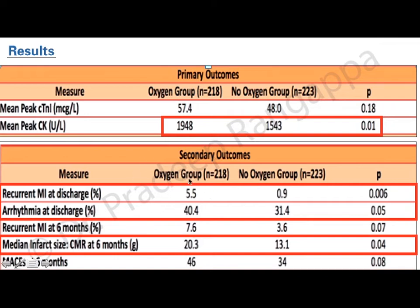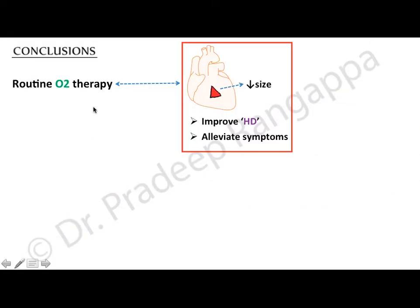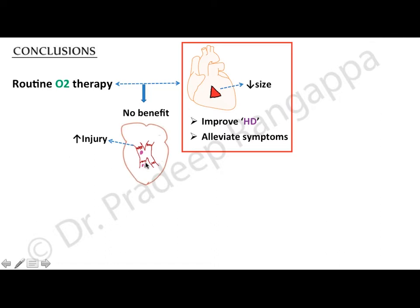The conclusions of the AVOID study were that routine oxygen therapy did not reduce infarct size, did not improve hemodynamics, and did not alleviate symptoms. There was absolutely no benefit — in fact, routine oxygen therapy increased myocardial injury as evidenced by rise in cardiac troponin and CPK. Oxygen was not beneficial in any way; if at all, it was deleterious in increasing myocardial injury.